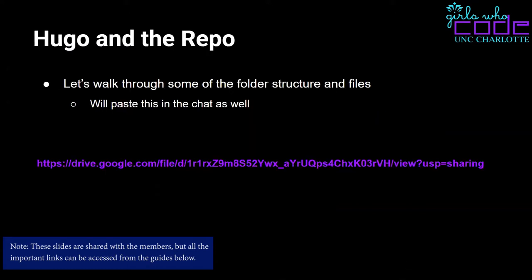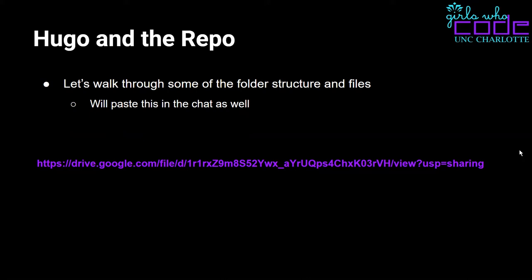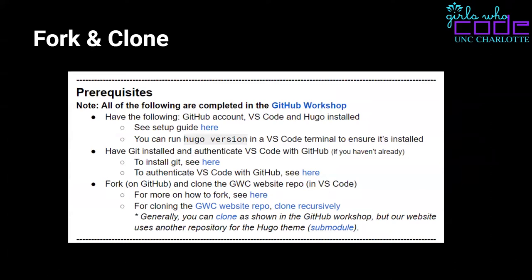This is the setup and prerequisites for today. If you look at that document, it has everything we'll talk about before we start messing with stuff. At the top you'll see the prerequisites: having a GitHub account, VS Code, Hugo installed, Git installed, and authenticating with VS Code. There are links to each part of the workshop in the document. If you run through the whole GitHub workshop, you'll have all of this set up.